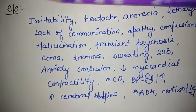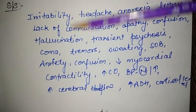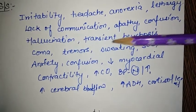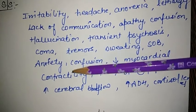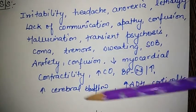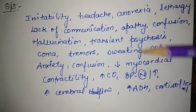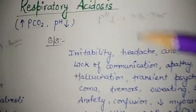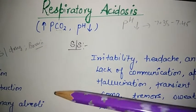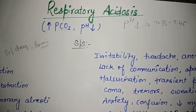Signs and symptoms of respiratory acidosis vary according to the cause. For example, with a neurological injury, symptoms may include irritability, headache, anorexia, lethargy, lack of communication, apathy, confusion, hallucination, transient psychosis, coma, and tremors. Other signs include sweating, shortness of breath, anxiety, decreased myocardial contractility, increased cardiac output, normal or increased blood pressure, increased cerebral blood flow, and increased levels of antidiuretic hormone and cortisol. These vary depending on the severity and the body's compensatory mechanisms.